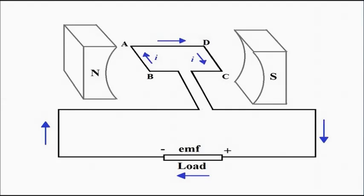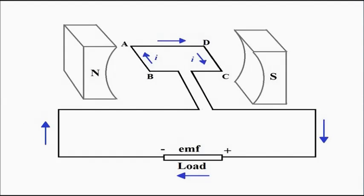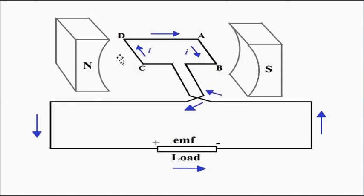When the coil is in the position where AB is towards the north pole and CD is towards the south pole, current flows from B to A, A to D, D to C, and then through the load. When the coil rotates by 180 degrees, AB goes to the south pole side. Irrespective of which coil side is present, the side towards the north pole always has current flowing upward, and the side towards the south pole always has current flowing downward.